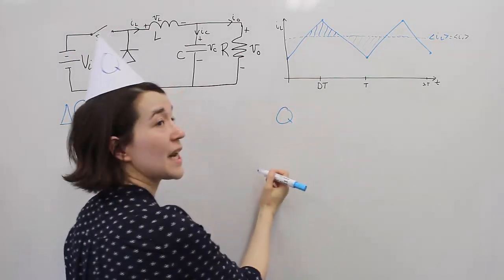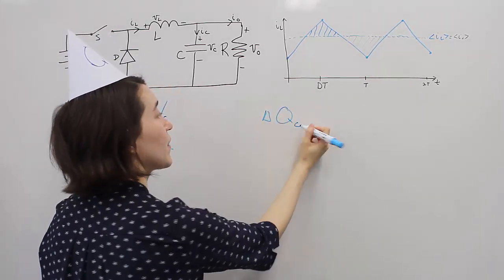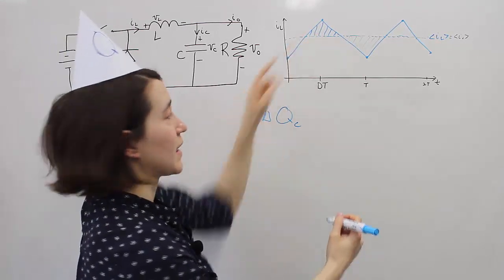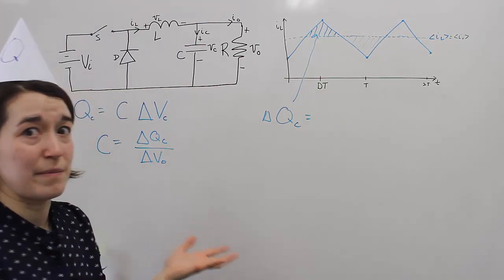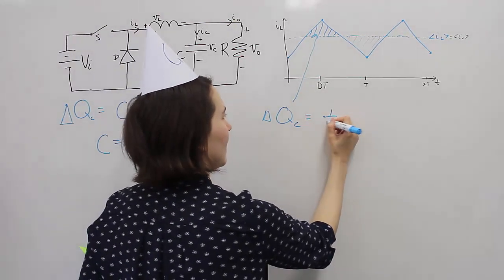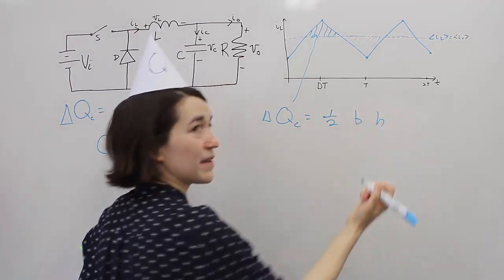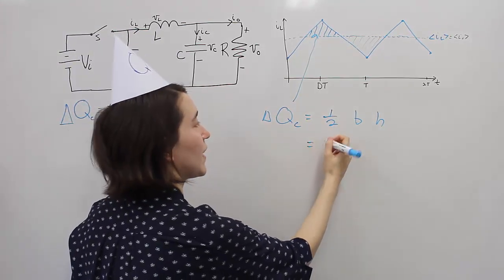So let's do that. So first we'll do the change in charge of the capacitor, and it's going to be this calculation. We notice that this is a triangle, and so we can do one half base times height, basic geometry, and now we just need to find these values.